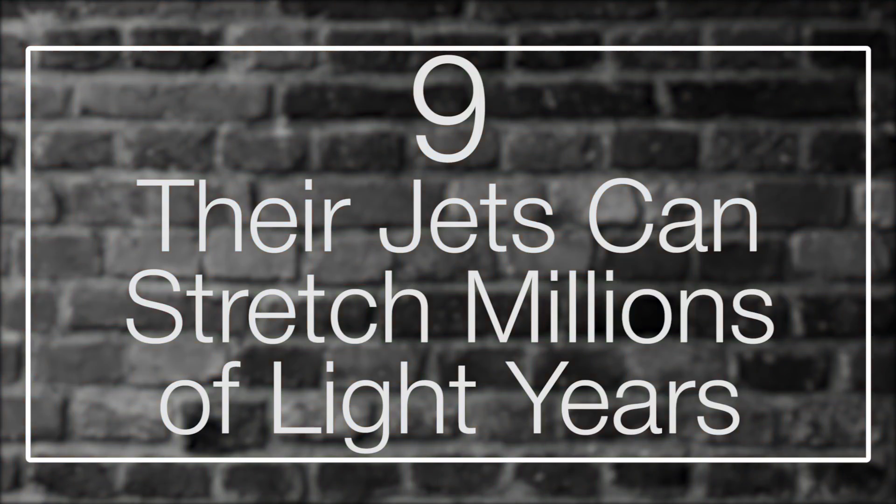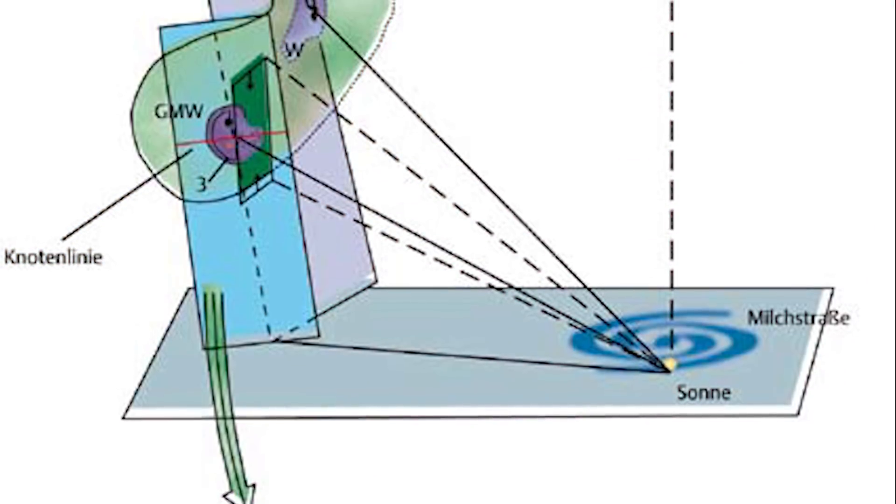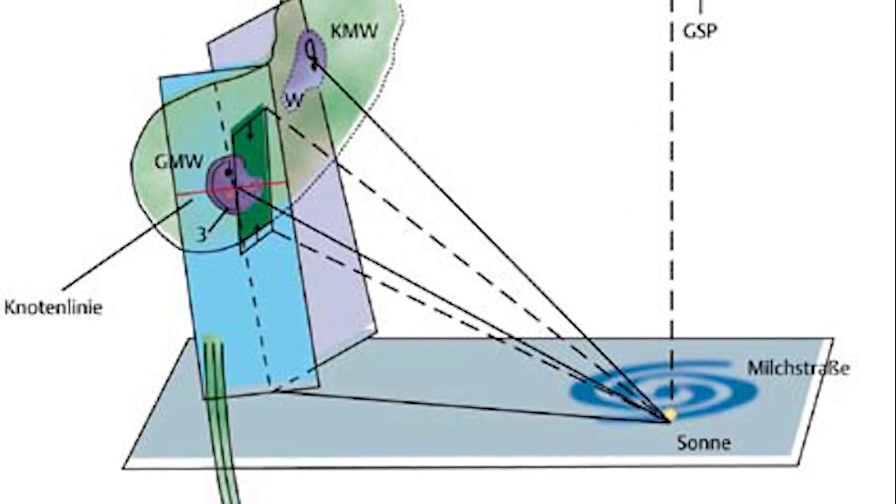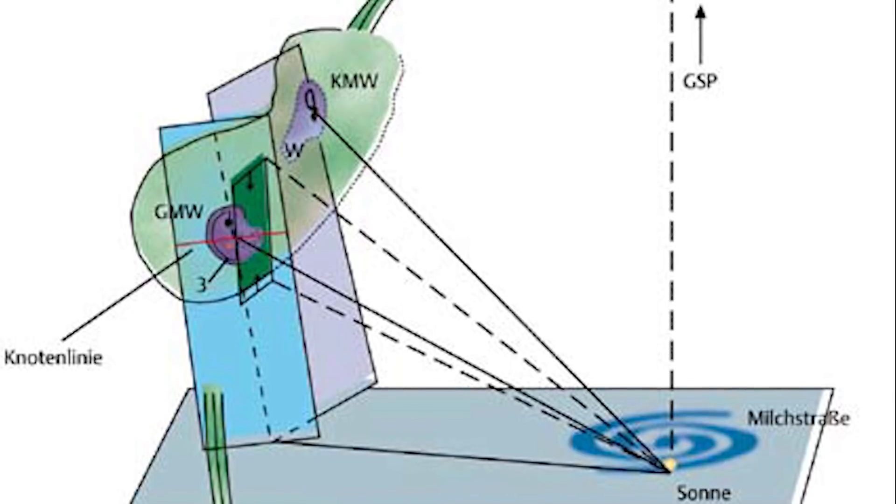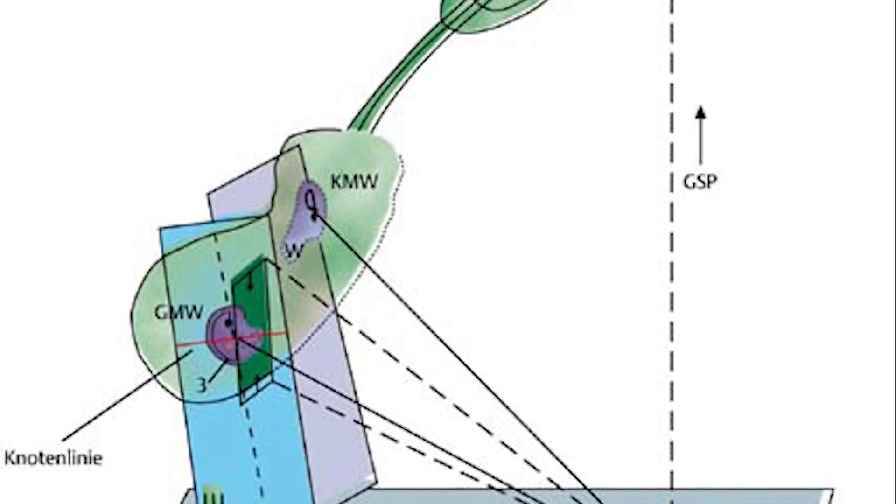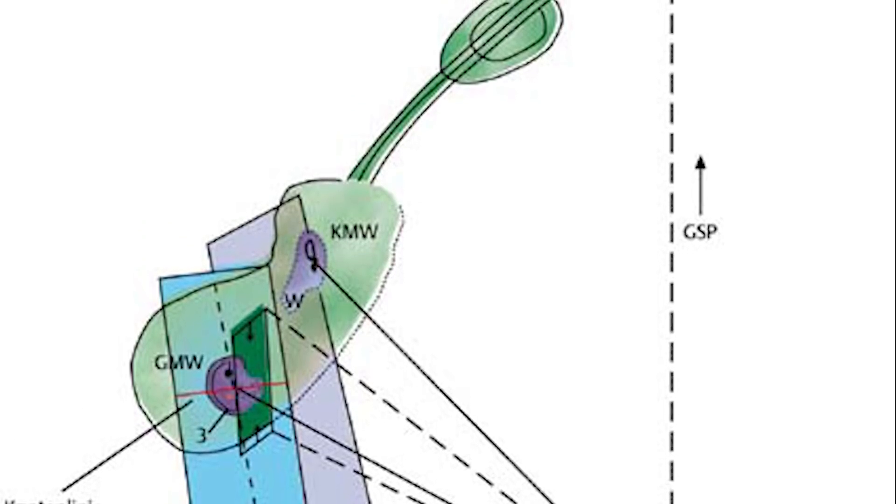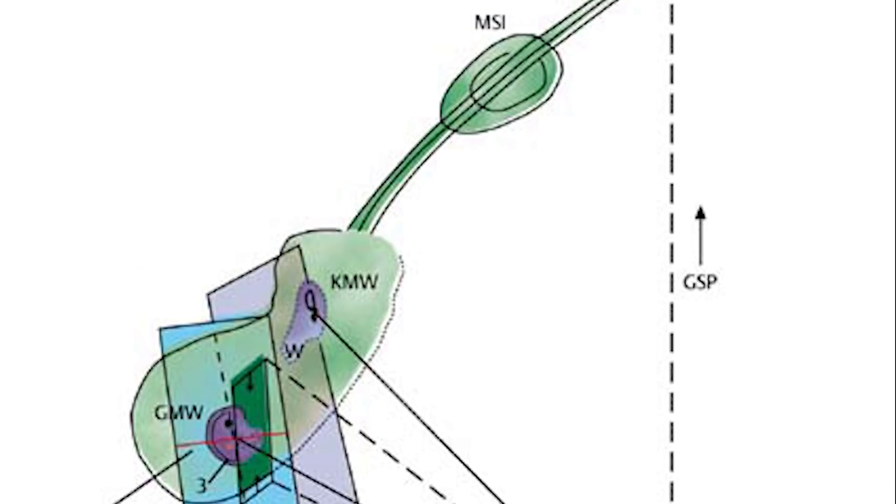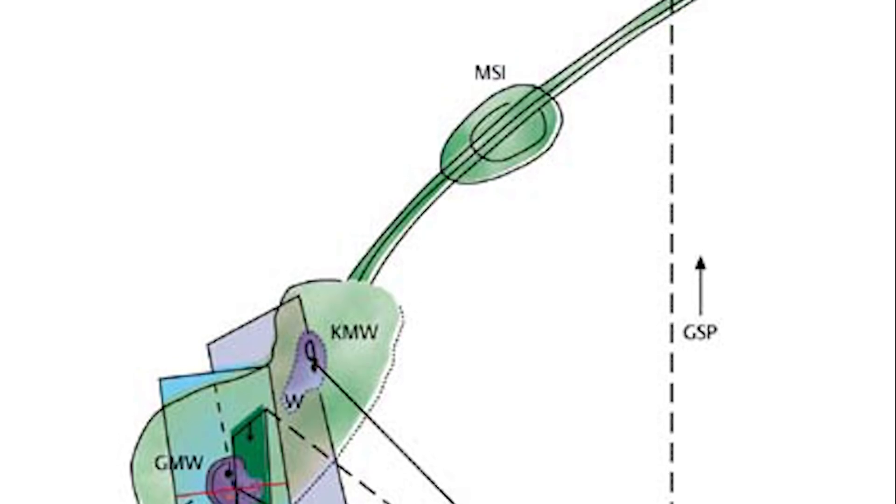Number 9: Their Jets Can Stretch Millions of Light Years. Speaking of eruptions from black holes, let's talk about the small and large Magellanic Clouds. These are two dwarf galaxies that orbit our peaceful Milky Way. A stream of gas is left trailing behind the dwarf galaxies, reaching an incredible distance of 600,000 light years. Scientists believe these are remnants of two gargantuan explosions of energy that would have erupted around the same time that the Fermi bubbles were formed, give or take a million years or so.